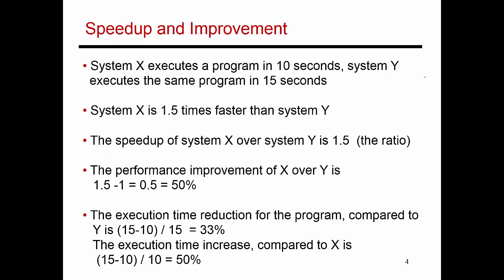So the speedup of x over y is performance of x divided by performance of y. And since performance is 1 by execution time, this is nothing but execution time of y divided by execution time of x. And I'm showing you an example over here where a given program takes 10 seconds to finish on system x and that same program takes 15 seconds to finish on system y.